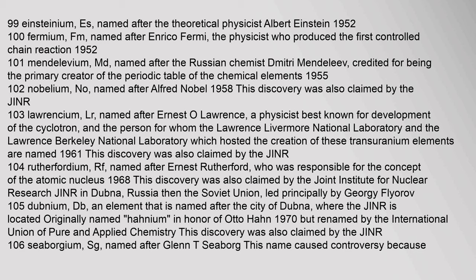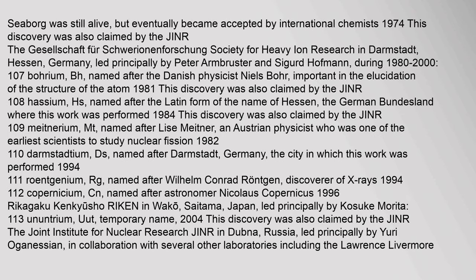Element 105, Dubnium (Db), named after the city of Dubna where the JINR is located, originally named 'Hahnium' in honor of Otto Hahn in 1970, but renamed by the International Union of Pure and Applied Chemistry — also claimed by the JINR. Element 106, Seaborgium (Sg), named after Glenn T. Seaborg. This name caused controversy because Seaborg was still alive, but eventually became accepted by international chemists, 1974 — also claimed by the JINR.